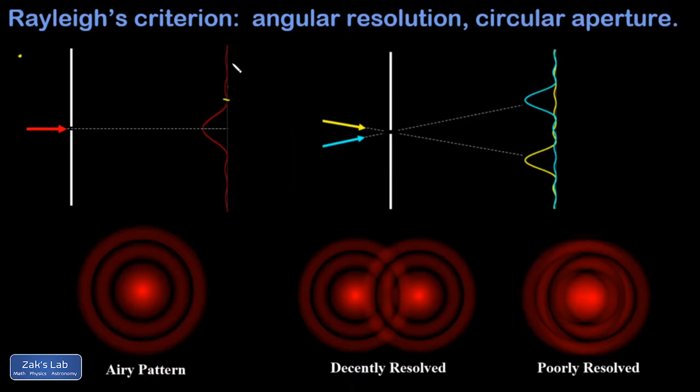Well, diffraction through a circular aperture is just the circular version of this. If we pass a ray of light through a small circular aperture, the diffraction happens with circular symmetry.